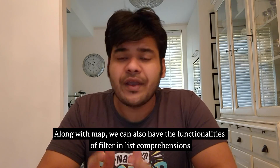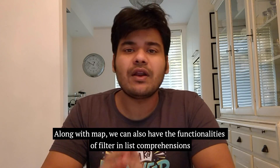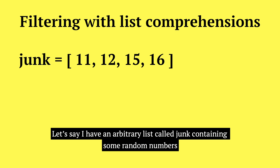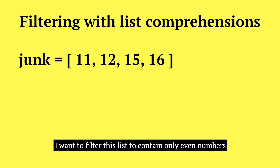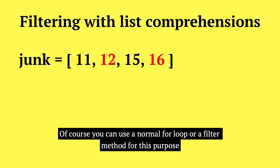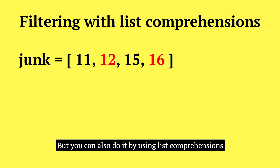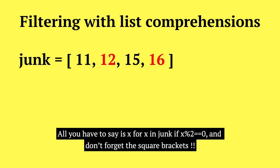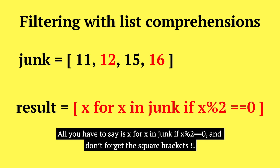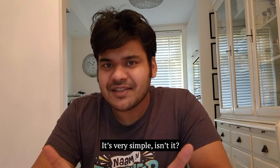Along with map, we can also have the functionalities of filter inside our list comprehension. Let's say I have a list called 'junk' containing some random numbers and I want to filter it to contain only even numbers. You can use a normal for loop or a filter method for this purpose, but you can also do it using list comprehension. All you have to do is: [x for x in junk if x % 2 == 0]. And don't forget the square brackets. It's very simple.